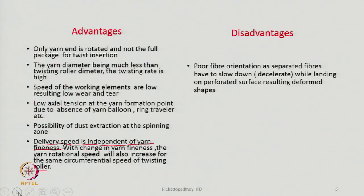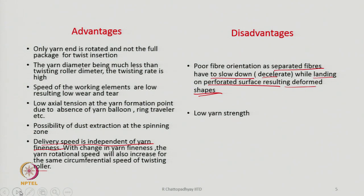The disadvantages are poor fiber orientation, because separated fibers have to slow down or decelerate when landing on the perforated surface, resulting in deformed shapes. This is quite dangerous because most of the fibers will change their straightened configurations — they come at high speed and then slow down, being made to fall on a slower moving surface. They deform because of deceleration, hence the yarn becomes very, very weak because most of the fibers are highly deformed. Utilization of the fiber length is not fully realized — that is one of the serious drawbacks with this technology.